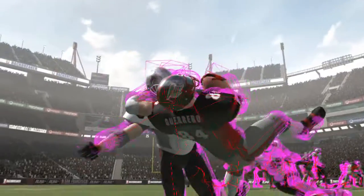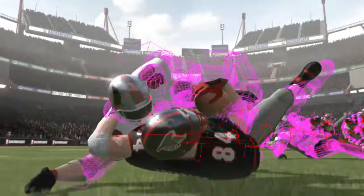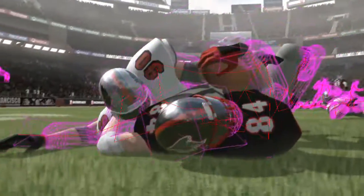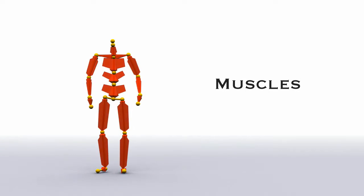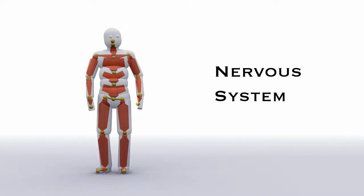Backbreaker is the first sports game that uses Euphoria. Euphoria is our technology that allows us to simulate human movement in real time. We do that by simulating the body of the character — in this case the player — the muscles and the nervous system.